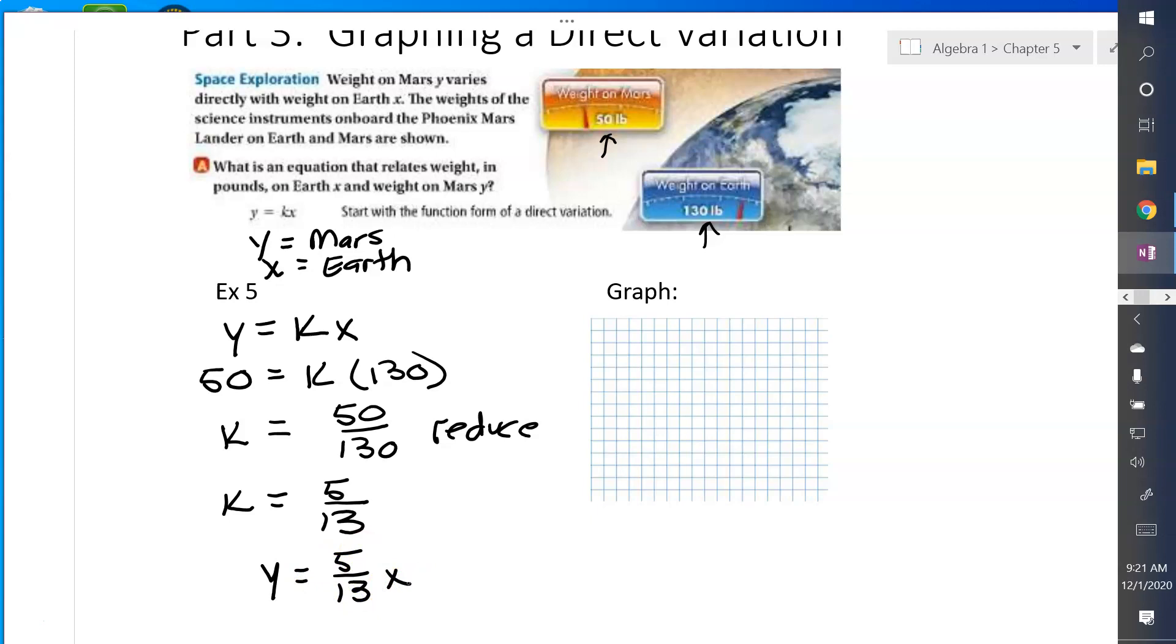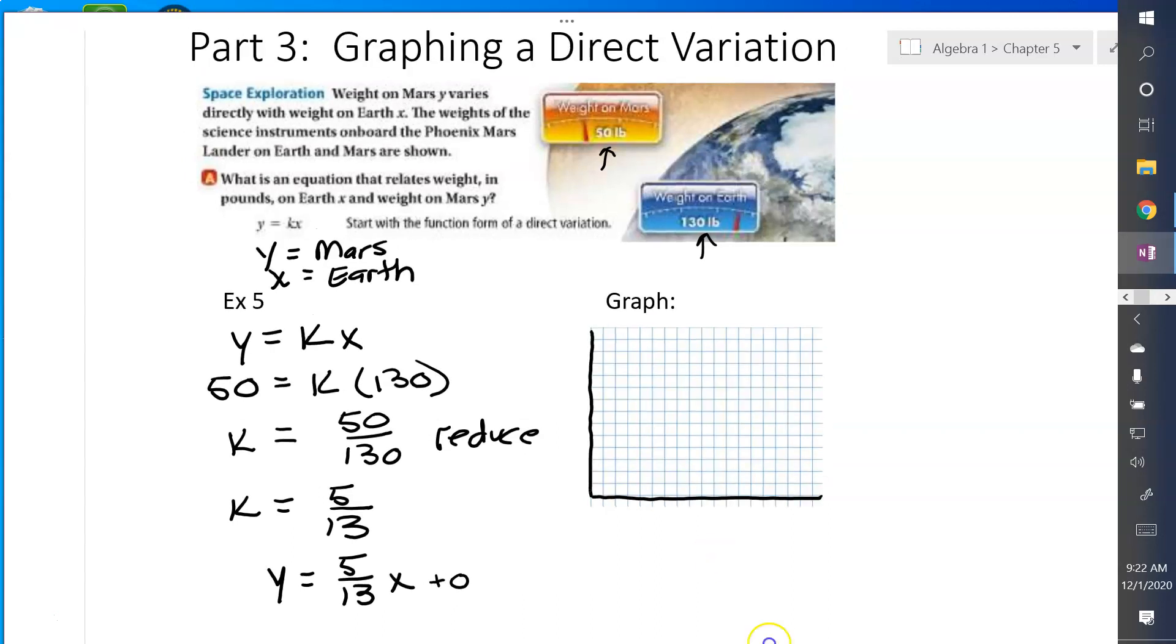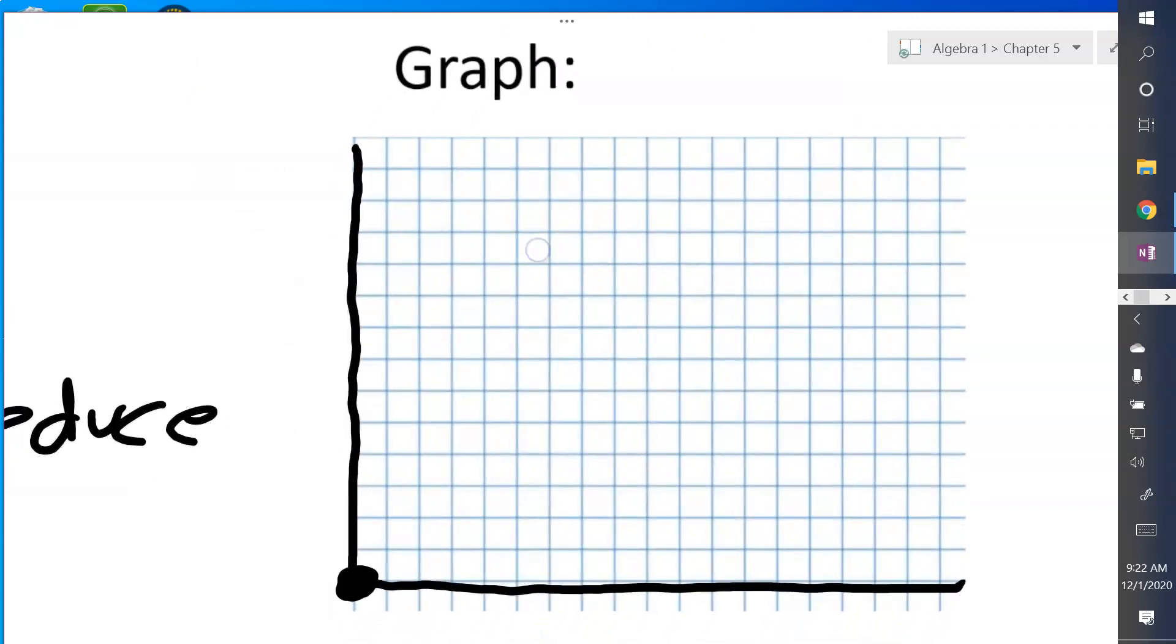And then we're going to graph it. Now for a direct variation, you don't have anything added or subtracted on the end. So if I imagine this as y equals 5 over 13 plus 0, that would tell me that when x equals 0, y equals 0. And I'm not adding or subtracting, so I'm not going to go up or down the axis. I'm just going to put a point right there at the origin. And 5 over 13 is a slope. So I'm going to count up by 5 and over 13. So 1, 2, 3, 4, 5 and over 13: 1, 2, 3, 4, 5, 6, 7, 8, 9, 10, 11, 12, 13. So that's my two points that I need to graph the line. So there's my graph.